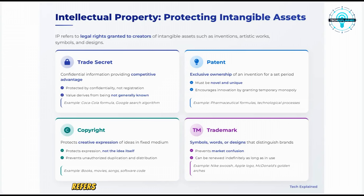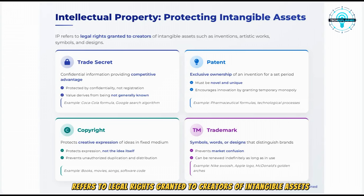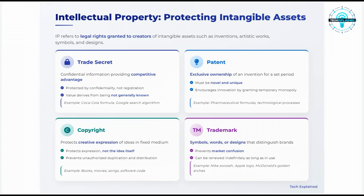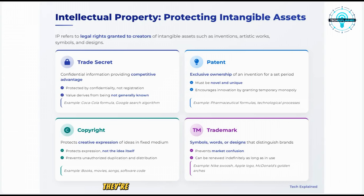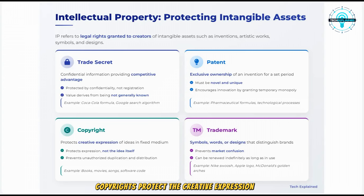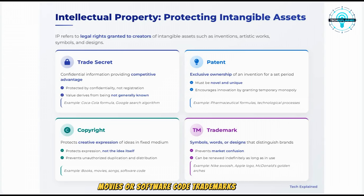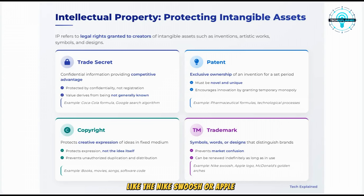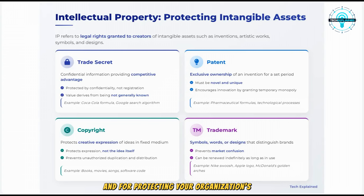Intellectual property, or IP, refers to legal rights granted to creators of intangible assets. There are four main types you need to know. Trade secrets are confidential information that provides a business with a competitive advantage — like the Coca-Cola formula — protected as long as they remain secret. Patents provide exclusive ownership of an invention for a set period; to be patentable, an invention must be novel and unique. Copyrights protect the creative expression of ideas (not the ideas themselves) in fixed mediums like books, movies, or software code. Trademarks are symbols, words, or designs that distinguish brands or products, like the Nike swoosh or Apple logo.